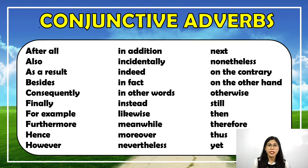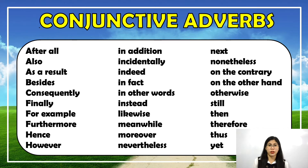As you can notice, conjunctive adverbs are the same as transitional devices. If two sentences or paragraphs are linked together, they are called transitions; otherwise they are called conjunctive adverbs.